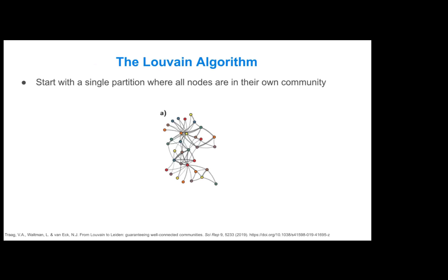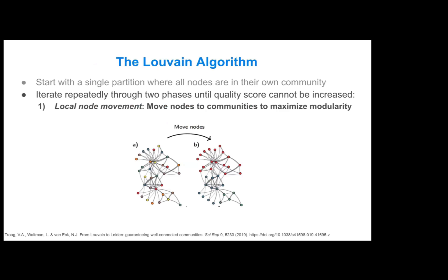For the Louvain algorithm, you start with a single partition where essentially all of the nodes are in their own community — every single node in the graph is considered its own community. Then you iterate through two phases until you cannot increase the modularity score any further.